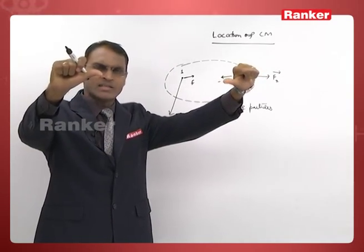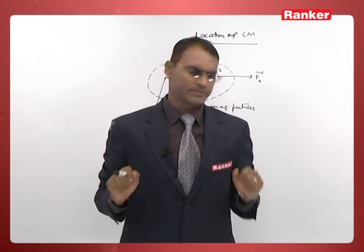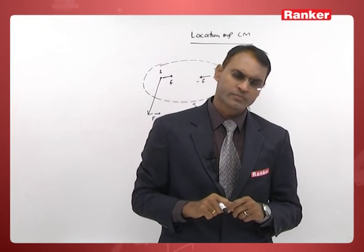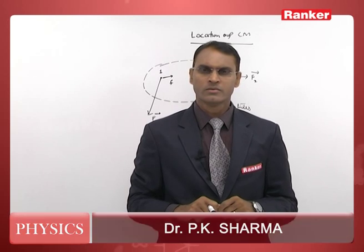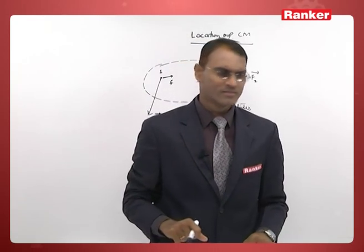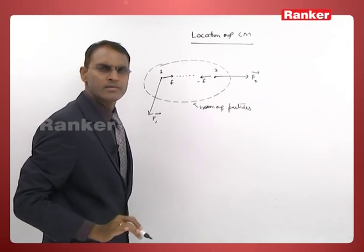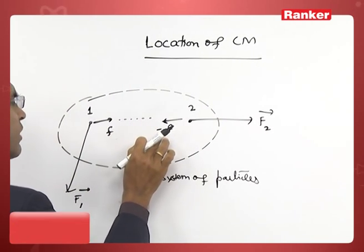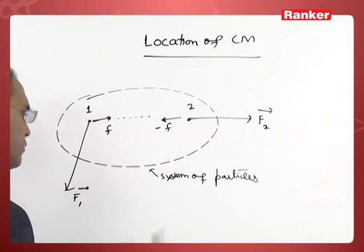These two particles, they interact. Interact means either they attract each other or they repel each other. According to Newton's third law, the interaction forces are equal and opposite. Furthermore, these interaction forces are collinear. They must pass through a particular line or same line. If you take it small f, this is minus small f. If you take this minus small f, this will be plus small f.